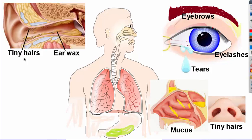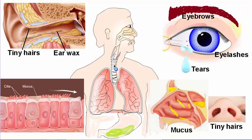In the ear, we have tiny hairs and earwax — a chemical substance that kills pathogens and sticks them to get them outside the body. In the trachea, we have microscopic hairs called cilia and mucus. The cilia vibrate and the mucus sticks the pathogen, and when the cilia vibrate, the mucus with the pathogens is released outside our respiratory tract.